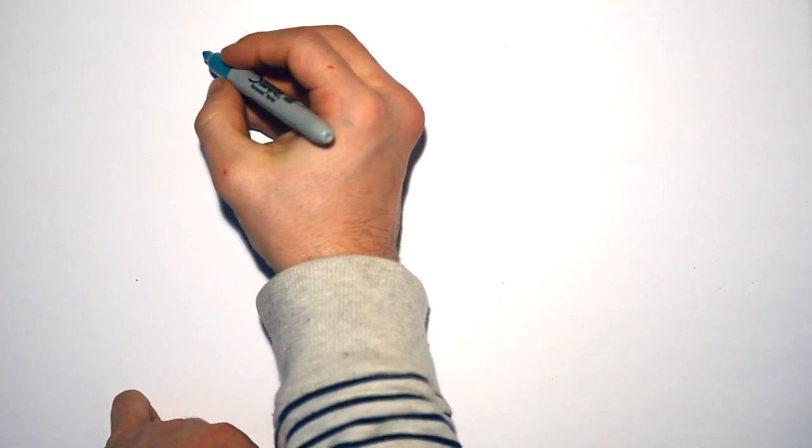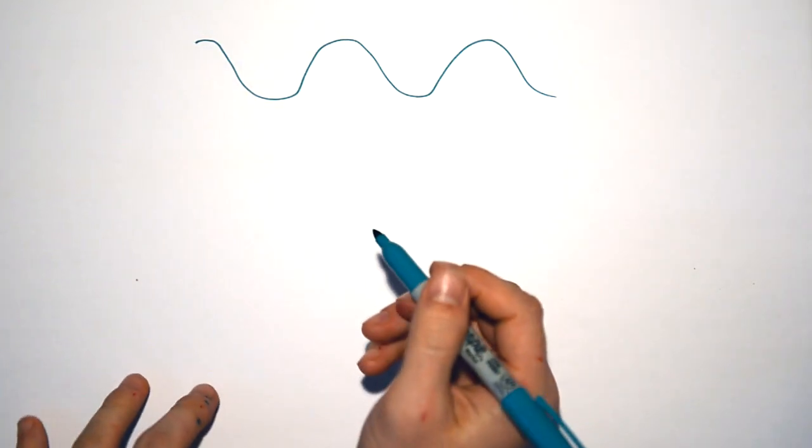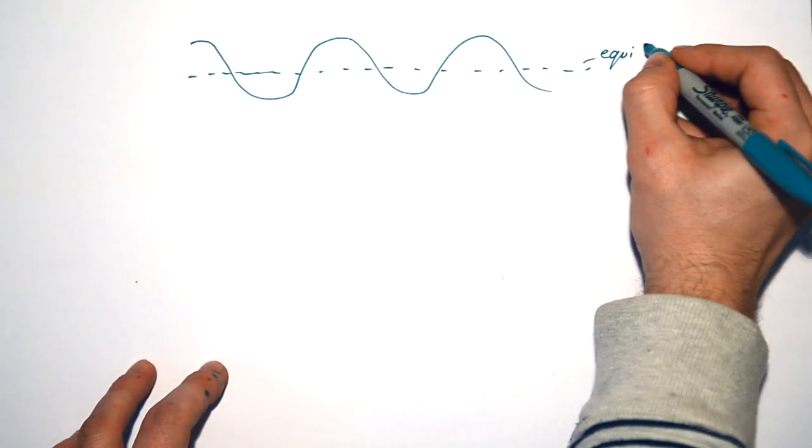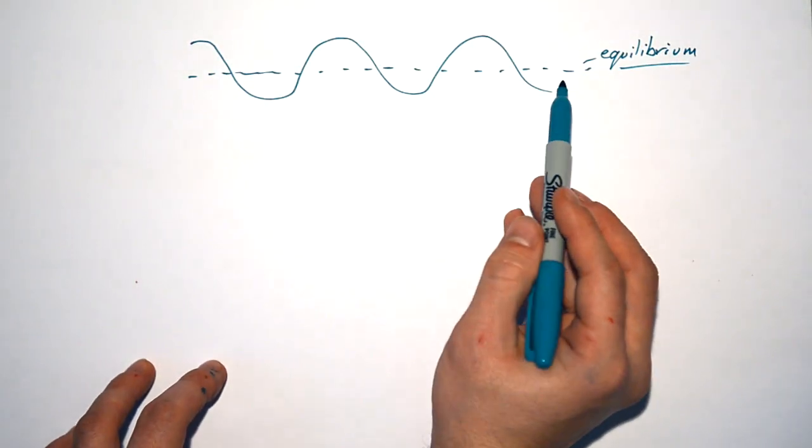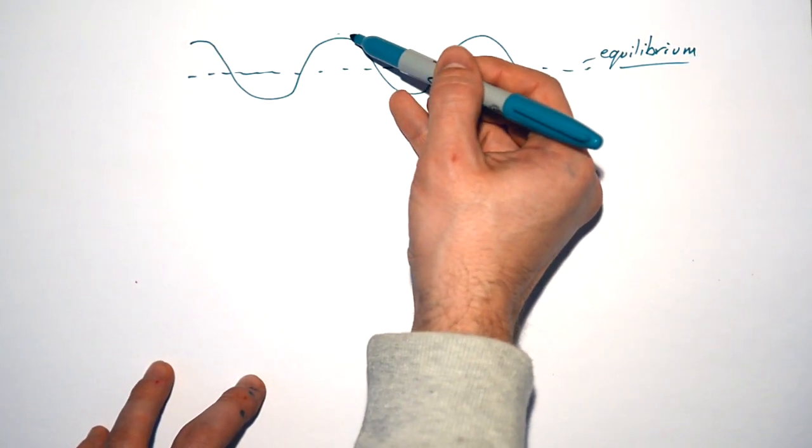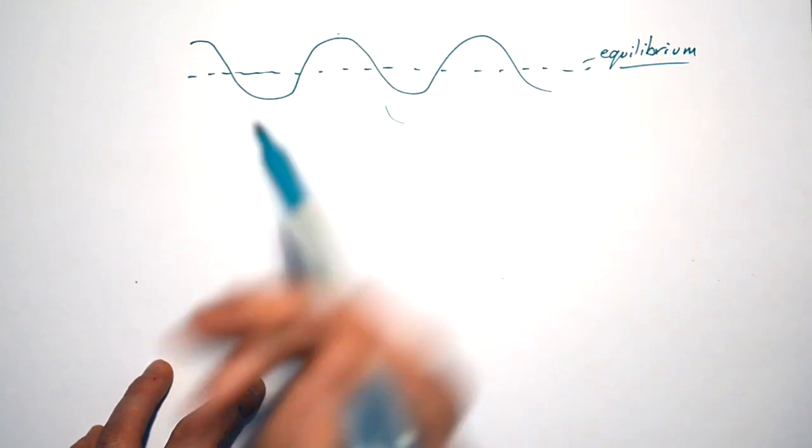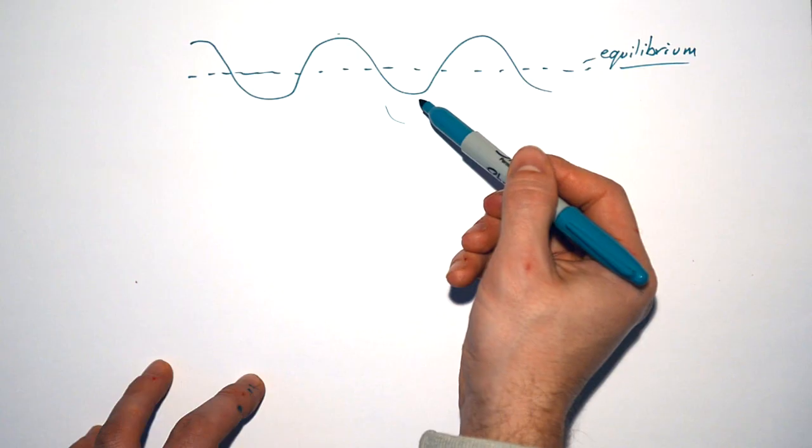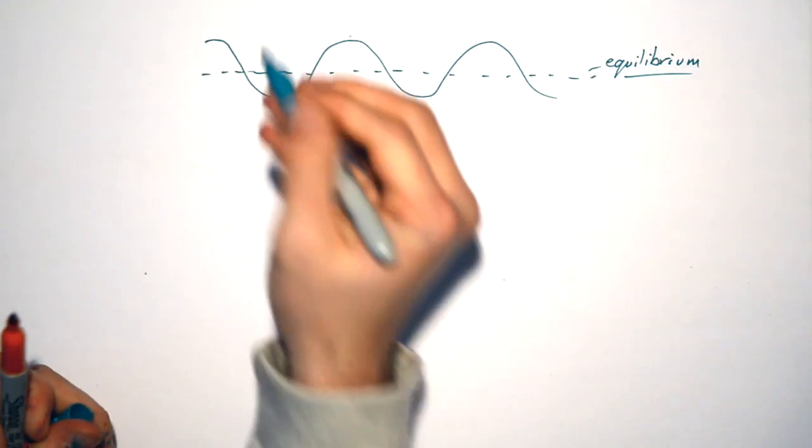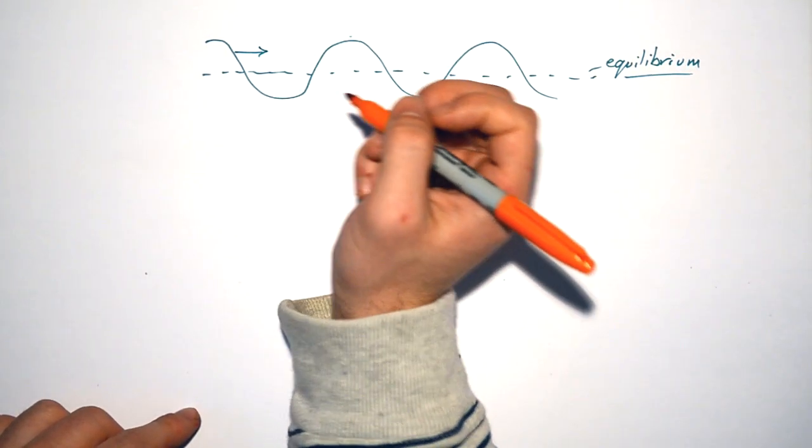So whether you have a transverse wave or a longitudinal wave, they can both be represented by a waveform by drawing it like this. So what does our wave actually show us then? Well, I haven't drawn something on here yet and that's the line of equilibrium. This is the line above and below which our oscillations happen. And don't forget that this wave is actually propagating, it's moving to the right.